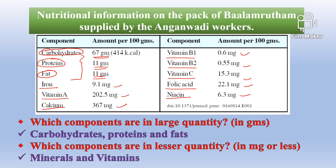Minerals and vitamins are present in lesser quantities. What can we understand from this? From this we can understand that our body requires certain nutrients in large quantities and certain nutrients in relatively lesser quantities.